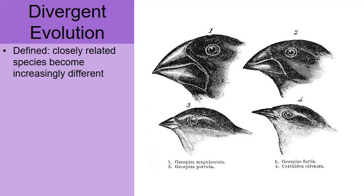Divergent evolution is defined as when closely related species over time become increasingly different. A great example that you're probably already familiar with, especially if you're in my class, are the finches — the Darwin finches on the Galapagos Islands. Each island has a little different habitat and food for the finches to eat, and so they've all adapted to eat various different kinds of foods, which you can see in their beaks. This is a great example of divergent evolution.